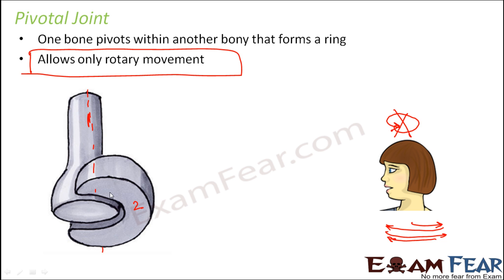This bony structure will only allow half rotation. This kind of movement is due to the presence of a pivotal joint where the neck and the head are joined. That is why we have this type of movement at our neck. So this is an example of a pivotal joint.